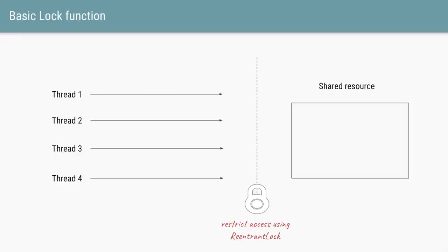That is the whole functionality of locks. Locks allow you to restrict access to a shared resource such that only one thread can access that resource. In a multi-threaded application, when there are multiple threads and you want to update a resource, but there could be a problem if multiple threads update it simultaneously, you can use the lock to restrict access to only one thread at a time.